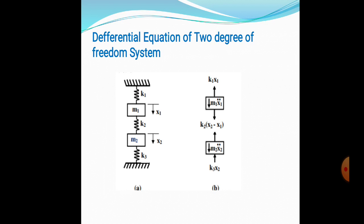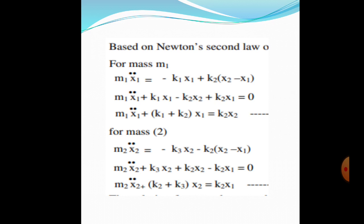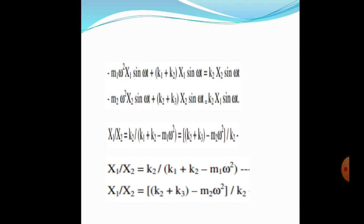The differential equations for mass M1 and M2: for mass M1, the forces are M1·X1 double dot and the force K2·(X2 - X1), the initial deflection and final deflection. For mass M2: M2·X2 double dot, similar to mass M1.